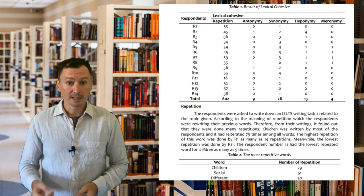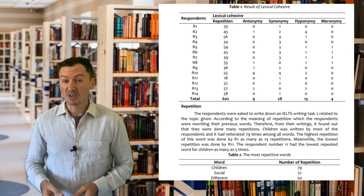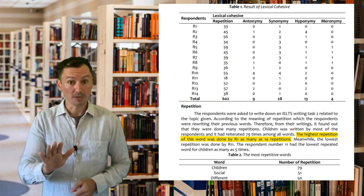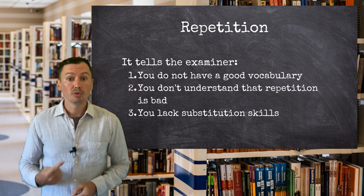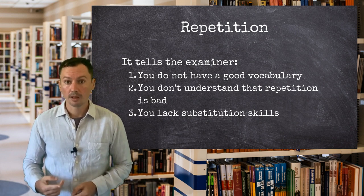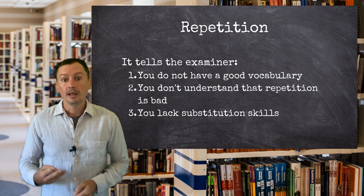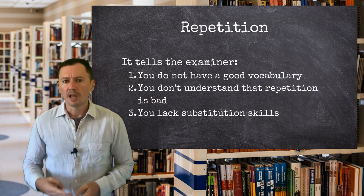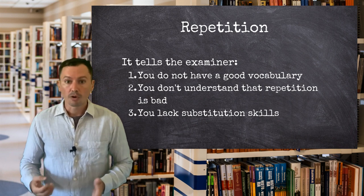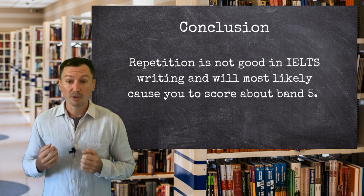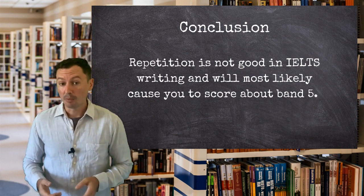The Indonesian study found that some candidates, when writing about issues of age, would use the word children up to 14 times in one essay, and even the least repetitive writer used that same word five times. This sort of problem shows the examiner three things: firstly, that you do not have the vocabulary to use a range of words; secondly, that you probably don't understand that repetition is not good in English; and thirdly, that you lack the skills to replace words — not just with synonyms, but with pronouns or omission. Repetition is a big problem in IELTS writing, and you must try to avoid it unless you're happy with a band five.